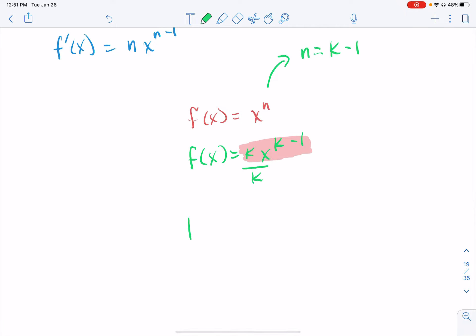However, its antiderivative should be x to the k. However, we didn't do anything with this k that's on the bottom. So it has to come along for the ride. And then don't forget your plus c.